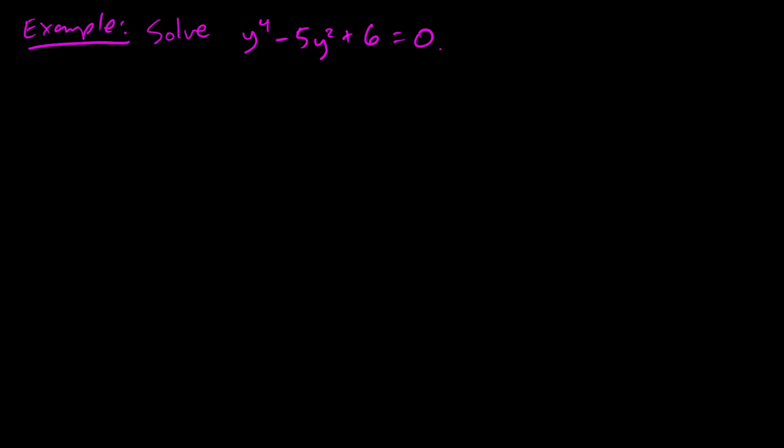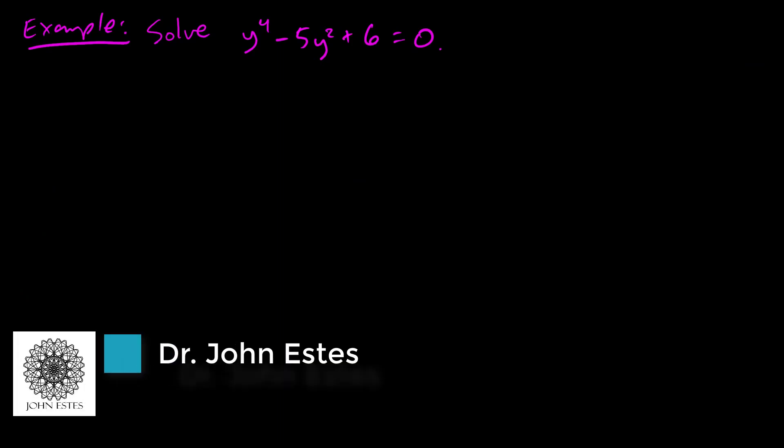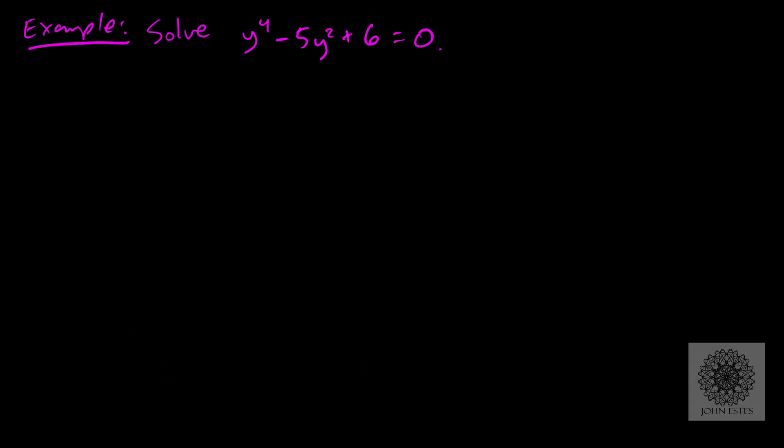Let's start today by looking at this example. I want to solve y to the fourth power minus 5y squared plus 6 equals 0. I know how to solve linear and quadratic equations, but this is a fourth degree equation and I just don't know how to do that. That sounds really tough — and actually that is true in general. Fourth degree equations can be very difficult. However, this one is not, because this one is quadratic-like.